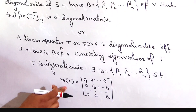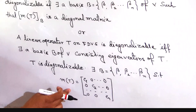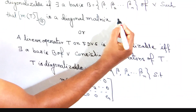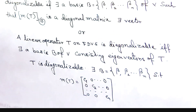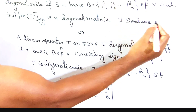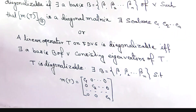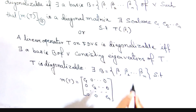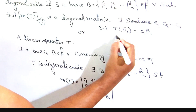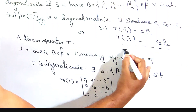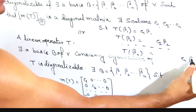Since this is the diagonal matrix of T with respect to the basis B, we can write: there exist scalars C1, C2, ..., Cn such that T(β1) = C1·β1, T(β2) = C2·β2, and T(βn) = Cn·βn.